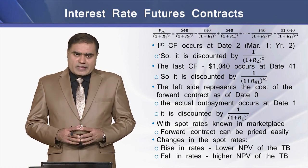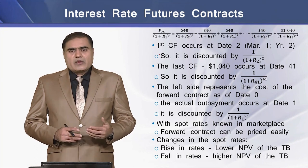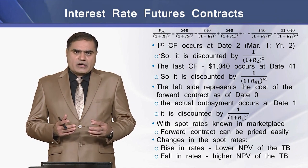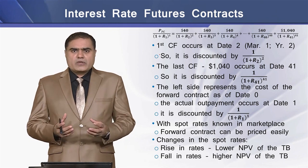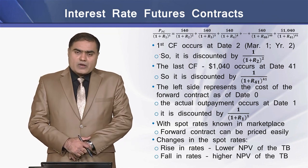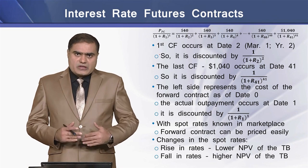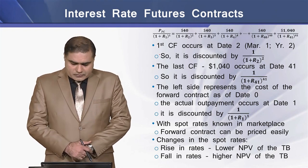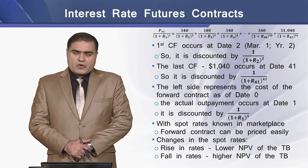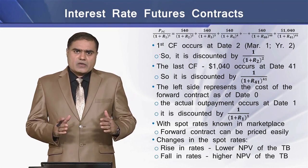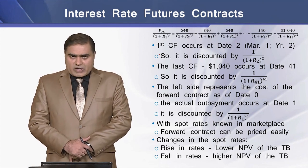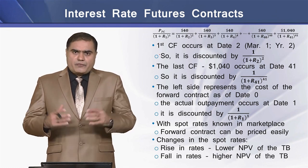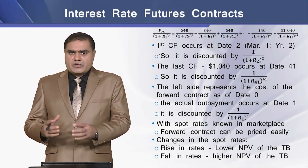If the spot rates are known in the marketplace, we can easily price this forward contract through discounting and net present value analysis. However, if spot rates change over the 40 semi-annual periods, the value of the contract will shift. In case of a rise in interest rates, the treasury bond will have a lower net present value and the value of the forward contract will go down. Conversely, a fall in interest rates will result in a higher net present value for the treasury bond and a higher value for the forward contract.